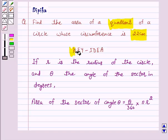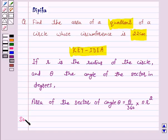We will take the help of this key idea to solve the above question. So let's start the solution. For solving this problem, first of all, we find the radius of this circle whose circumference is 22 cm.